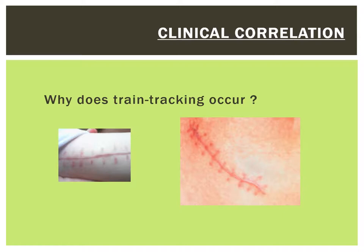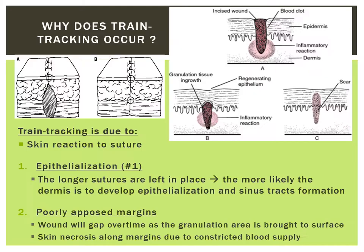Why does train tracking occur if you are using a non-absorbable suture with minimal tissue reaction? There are two reasons. The first and main reason is epithelialization, where sutures left in place develop a skin sinus tract around them. The second is due to gap margins — even when you have tight and close approximation of the skin edge superficially, the underlying tissue fills with granulation tissue and is slowly brought up towards the surface over time.